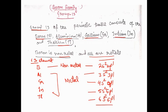In this group 13 elements, we have studied that it consists of five important elements: boron, aluminum, gallium, indium, and thallium. Boron is a non-metal; its outermost electronic configuration is 2s2, 2p1. Aluminum through thallium are metals, with configurations 3s2 3p1, 4s2 4p1, 5s2 5p1, and 6s2 6p1 respectively.